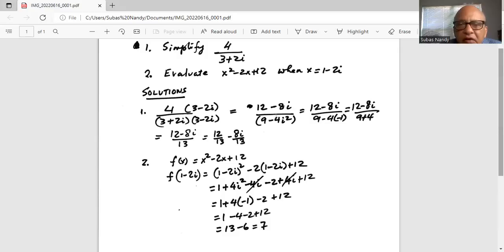So i is the imaginary number, which is square root of minus 1. And this type combination of imaginary number, which is i, and a regular number is called a complex number. Like for example, 1 minus 2i.